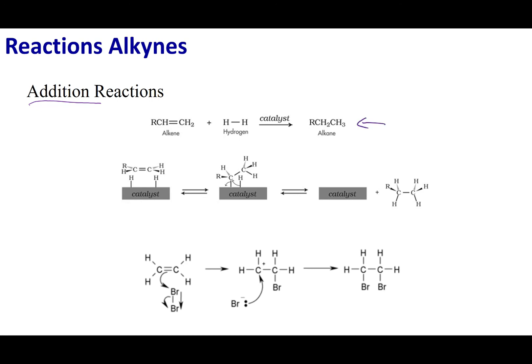The first type of reaction is a hydrogenation reaction, which means I'm adding H2. Since it's a double bond, I want to add H2 across my double bond. I break the double bond and make it a single bond, then add the new molecule across — breaking the hydrogen into two parts and putting one hydrogen on each carbon.